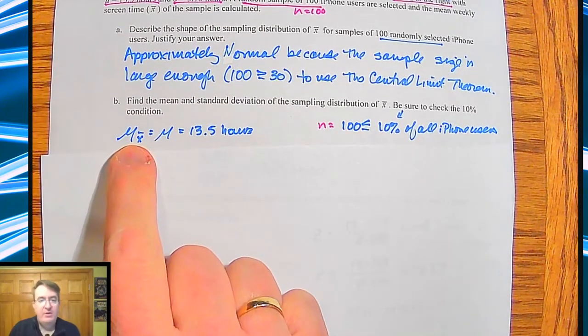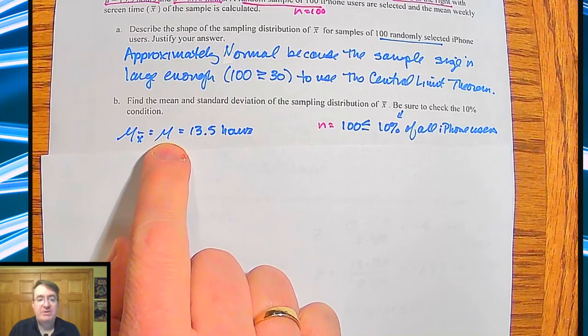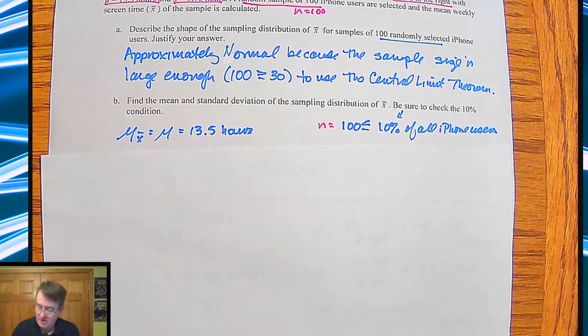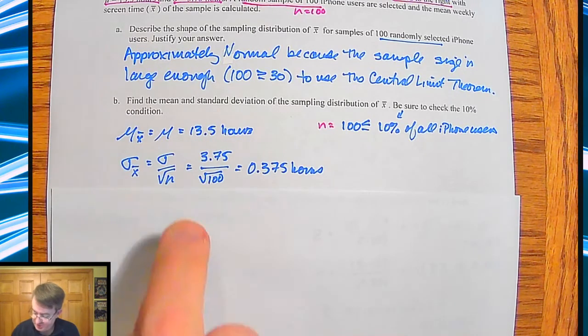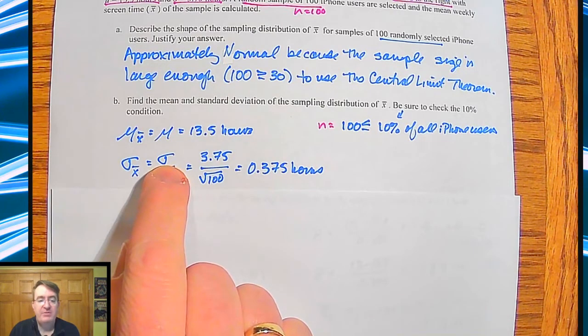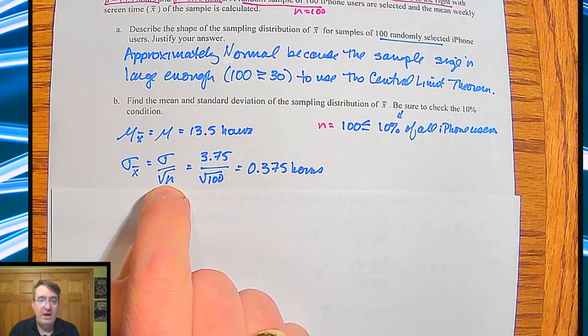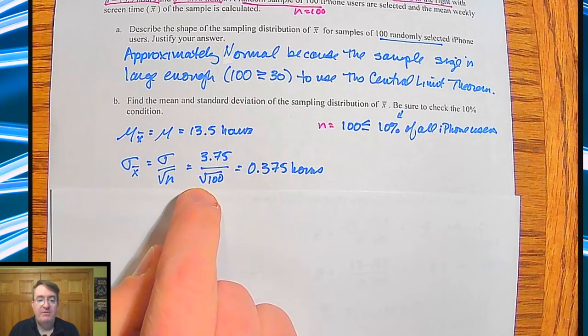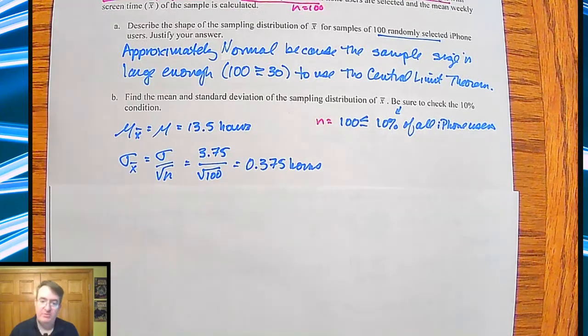So your mean of your sampling distribution is going to be the same as the mean of the population. So it's 13.5 hours. And your standard deviation is going to go down because we're going to take the standard deviation divided by square root of n. So 3.75 divided by square root of 100. And I get 0.375 hours.